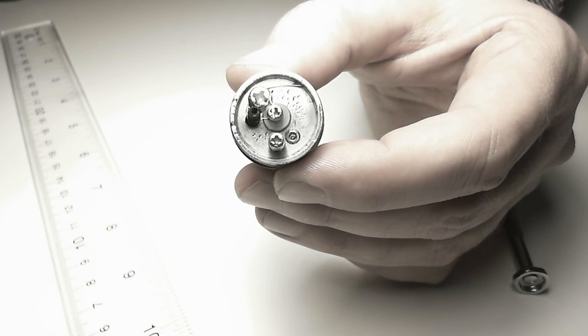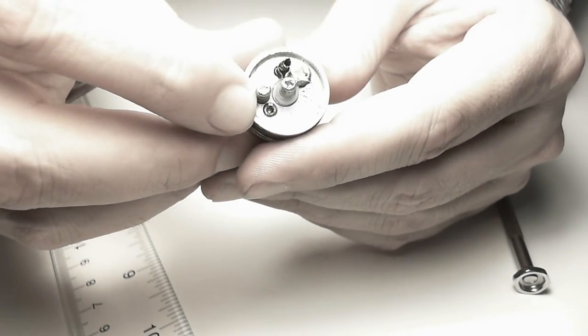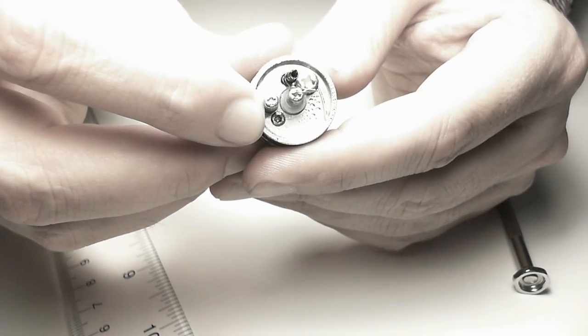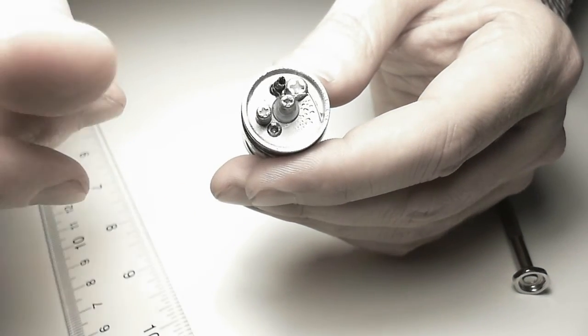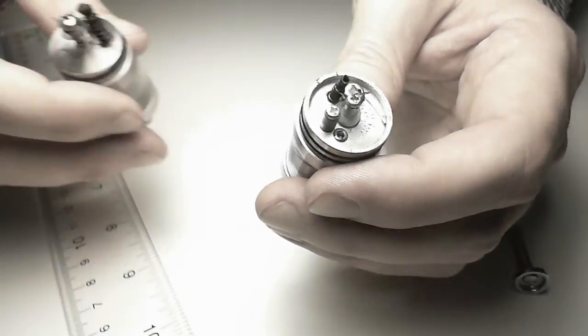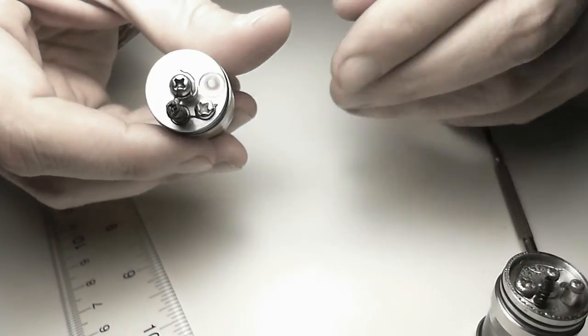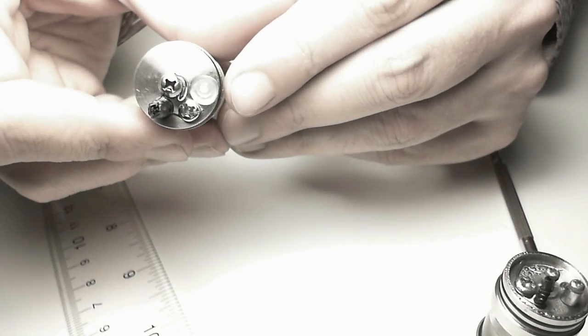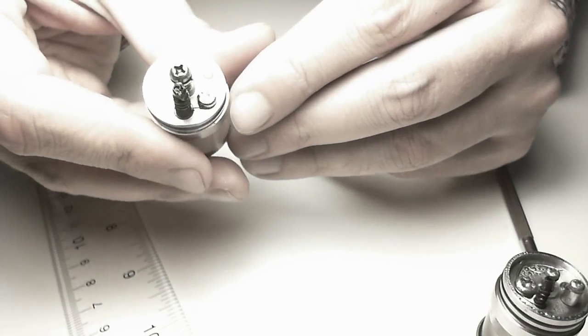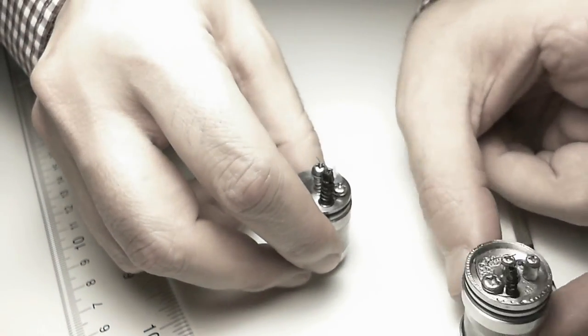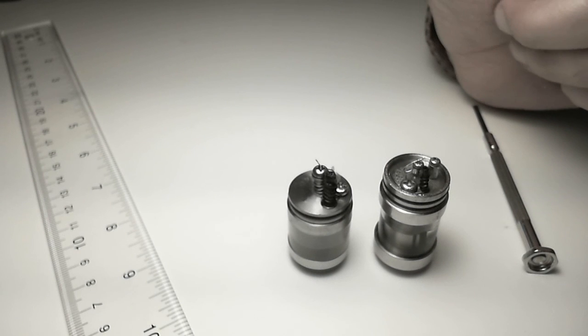In case of the fill hole, as you see, it's an allen screw, so you need to carry an allen driver to open it up and put it back. But in the case of the RSST, this plastic cap really makes life easy. You just open and fill it, and then you're good to go. Let me know what you think and put it in the comment section. See you soon, bye.